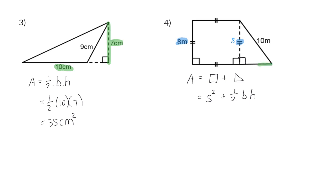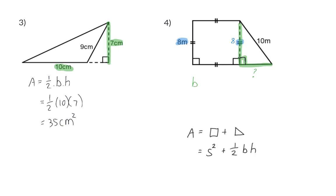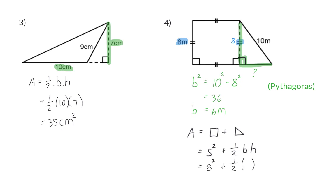For the formula for the area of a triangle we need the base and perpendicular height — the two sides that are perpendicular to each other. Therefore we need to determine the length of the base and we can do that using Pythagoras. To determine the value of the base squared we are going to take our hypotenuse, square that, and then subtract the other side squared. 10 squared minus 8 squared is 36, and the square root of this will give us the value of b, which will then be 6 meters. Now we can finally determine the area of our shape: the square has sides of 8 meters, and for our triangle the base is 6 meters and the height is 8 meters. So the total area for this shape is 88 meters squared.